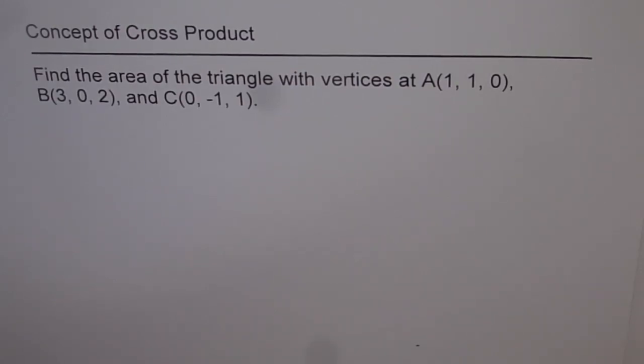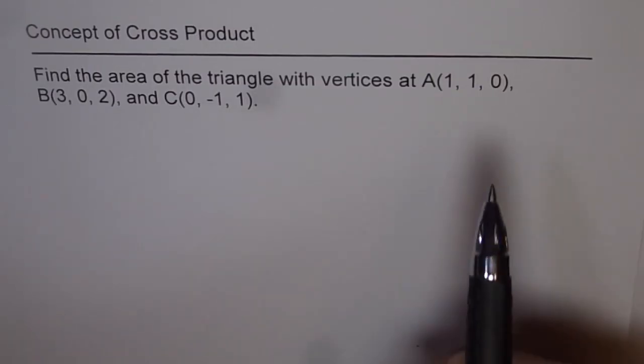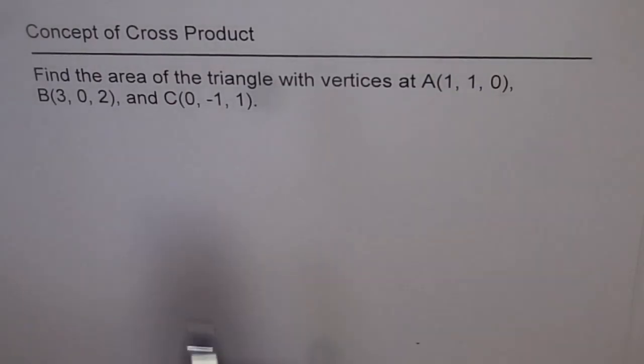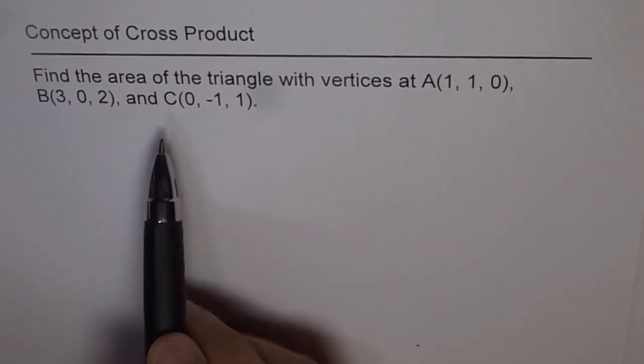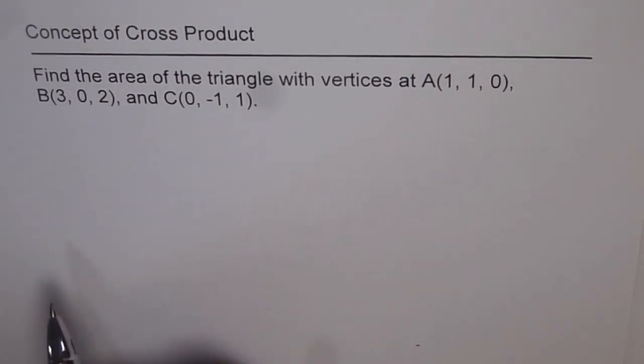Concept of cross product. Find area of triangle with vertices A, B, and C where A is (1, 1, 0), B is (3, 0, 2), and C is (0, -1, 1).